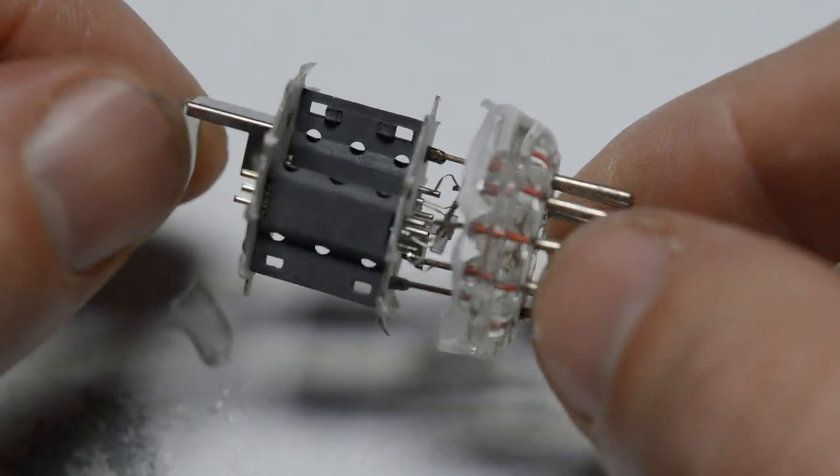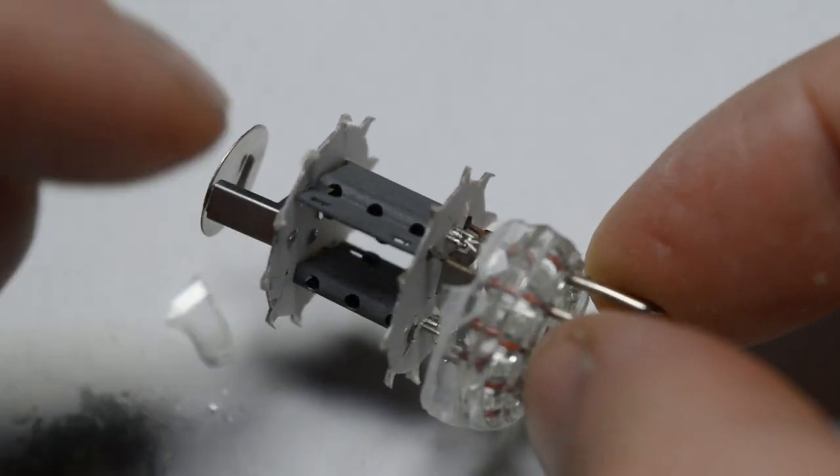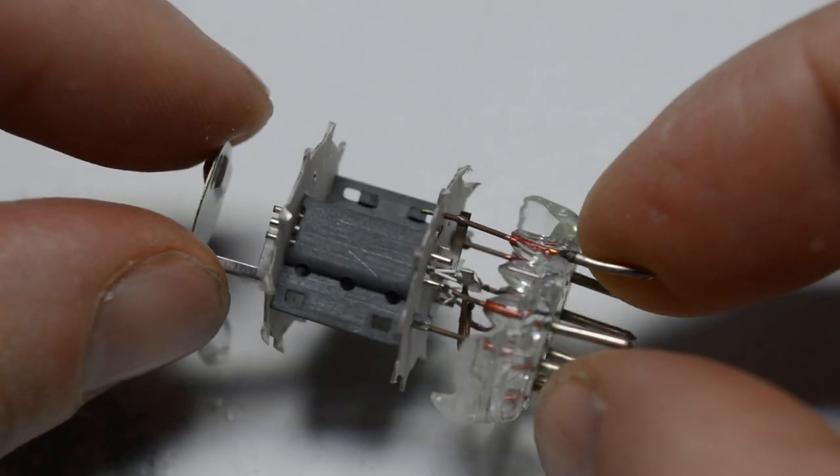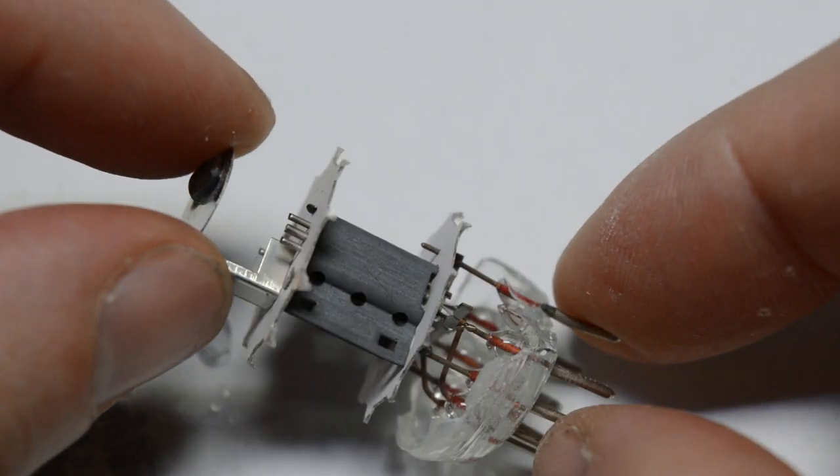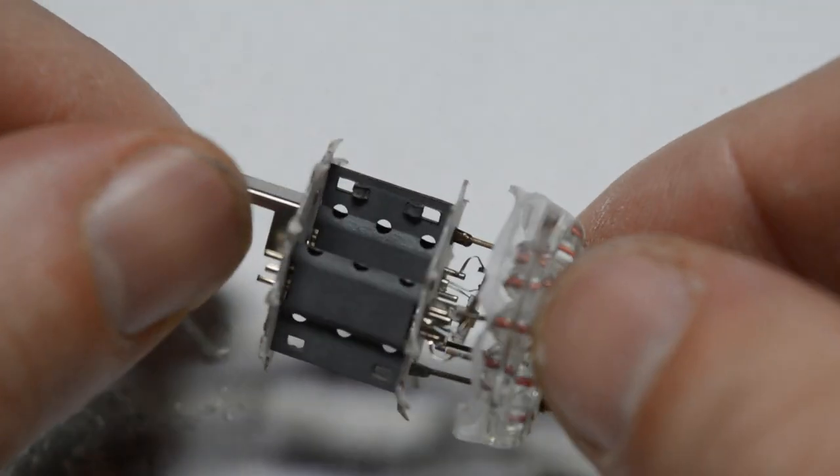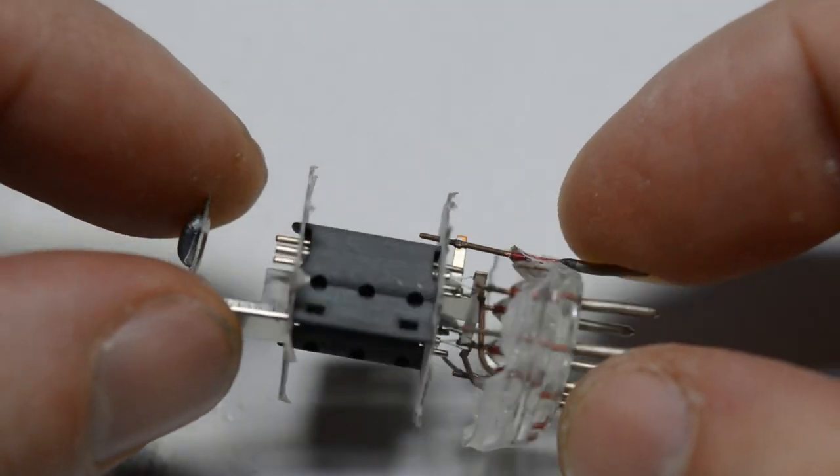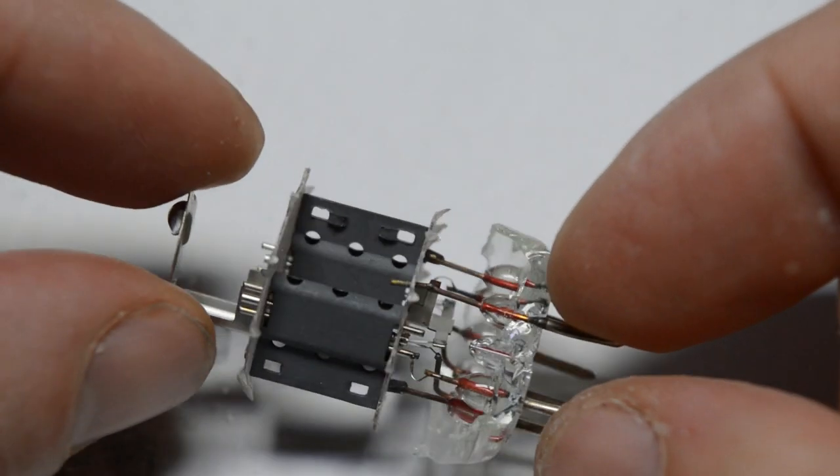So next step will be to take apart one of these anodes and see exactly what's beneath them, how the grid and the filament and cathode look. So for that, again, we need another tool. This time it will be a simple screwdriver.